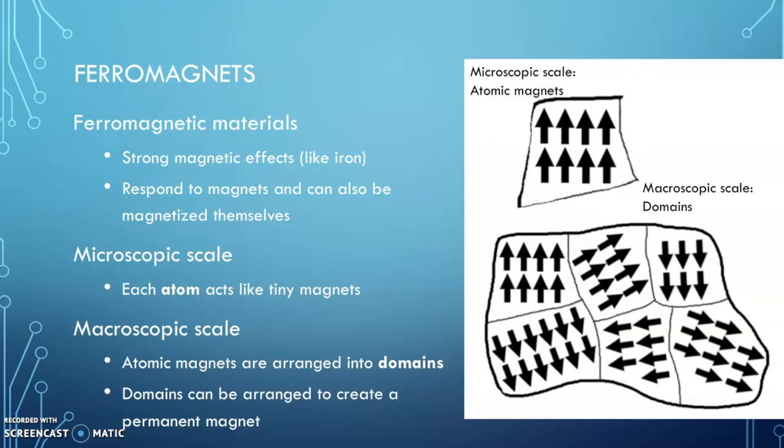So these ferromagnetic materials all have strong magnetic properties and they can respond to magnets or they can even be magnets themselves. And we'll talk about that more in a second. But the ferromagnetic materials have both macroscopic scales and microscopic scales like you can see in this picture.